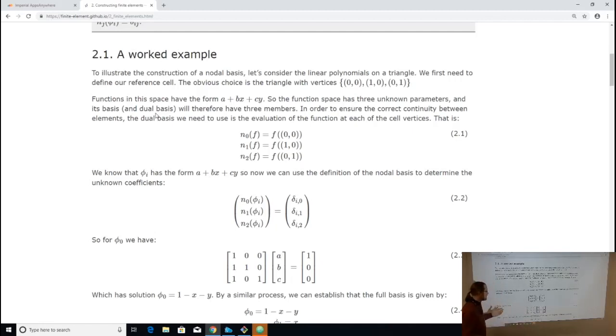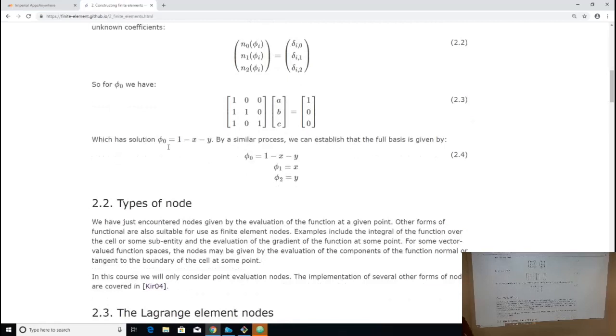And when I've done that, I have a system which is conveniently square. So now you understand why the nodal space has to be the same size as the primal space, because the number of columns is given by the size of the primal space, and the number of rows is given by the number of nodes I have. So this is a square system. Because I'm not point evaluating at the same point, it's not singular. And I can invert it. And when I invert it, I discover that the solution is that the first basis function is one minus x minus y.